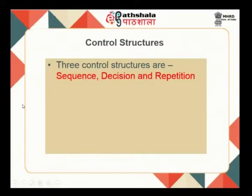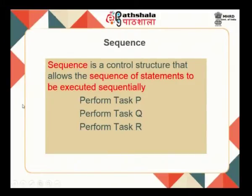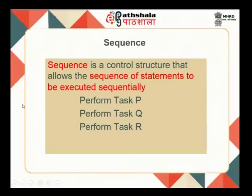Control structures are the heart of any program or algorithm, and there are three types. The first is called sequence. Sequence is a control structure that allows elements to be executed sequentially. For example, the code 'perform task P, task Q, task R' represents a sequential control structure. In any algorithm, we will have sequence structures where we execute some set of statements in order.